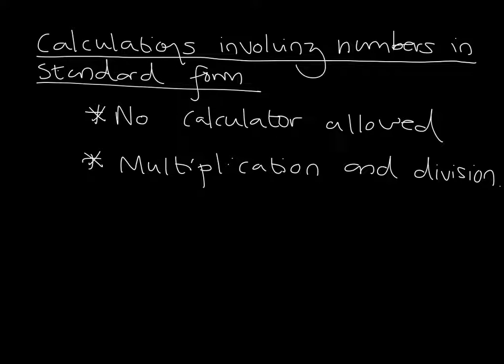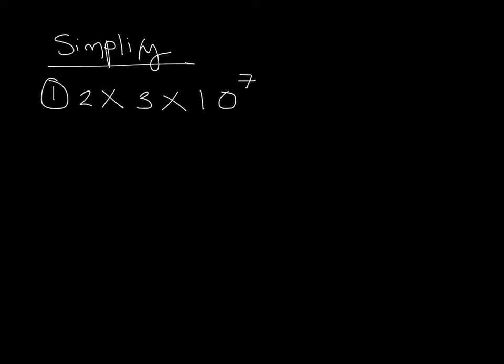We're now going to look at calculations which involve numbers written in standard form. To start off with, we're going to look at non-calculator questions, although we will introduce the use of a calculator later on. We're also going to focus on multiplication and division calculations to begin with, and then later move on to addition and subtraction examples. Here, we have a 2 and a 3 which we can multiply together straight away, giving us 6 multiplied by 10 to the power of 7 as our final answer.